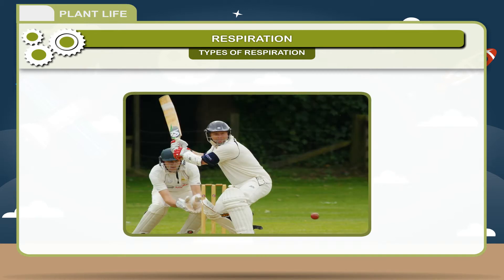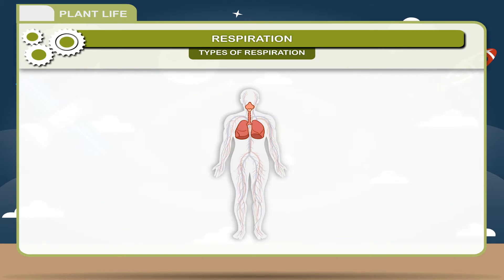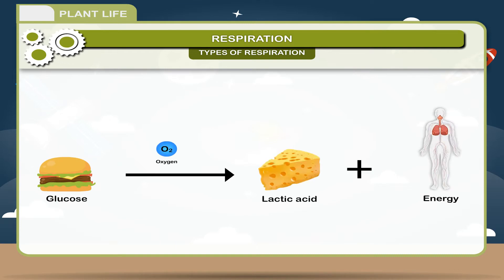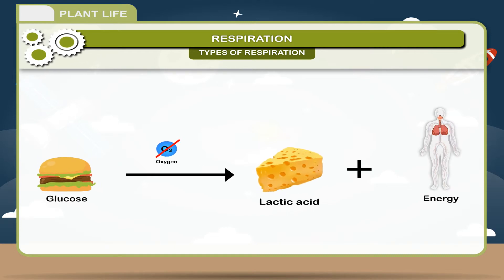In human muscle, anaerobic respiration takes place in a different manner, where glucose in the absence of oxygen converts to lactic acid and energy. Glucose in the absence of oxygen gives lactic acid + energy.